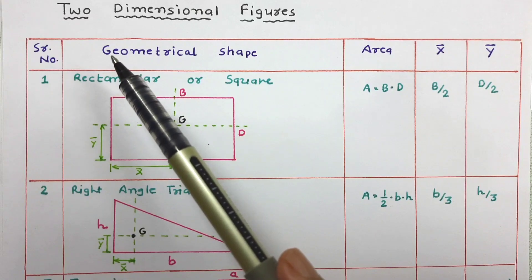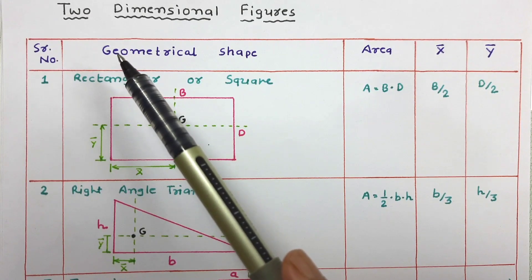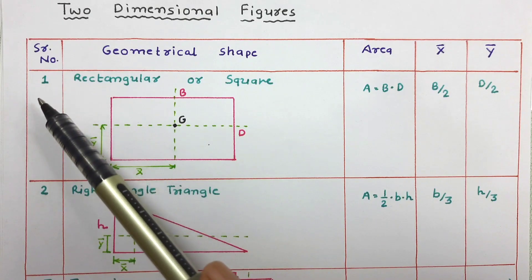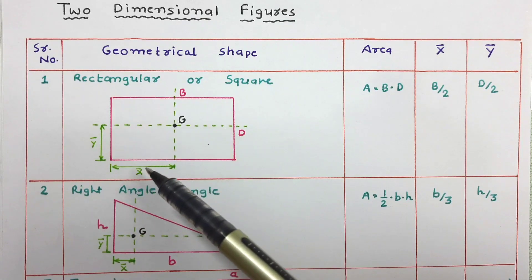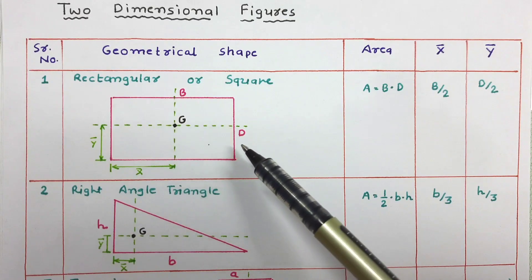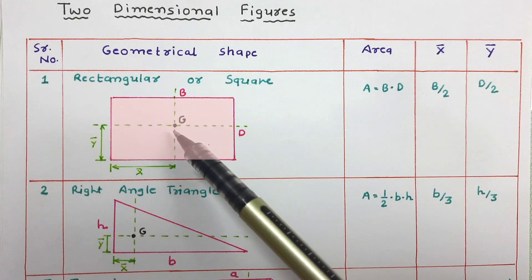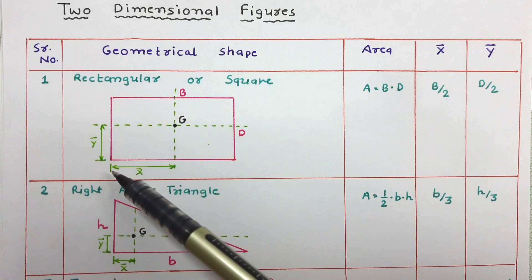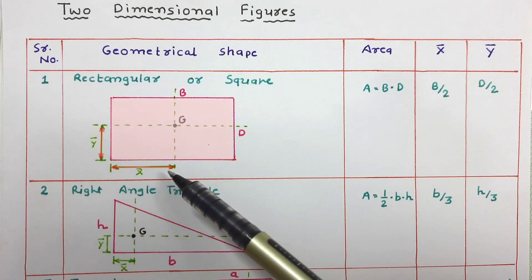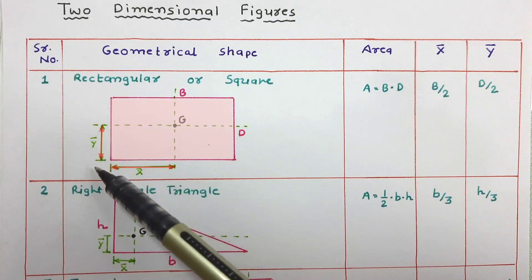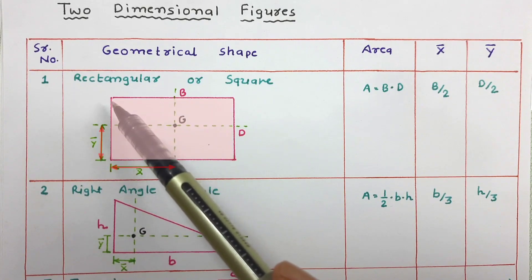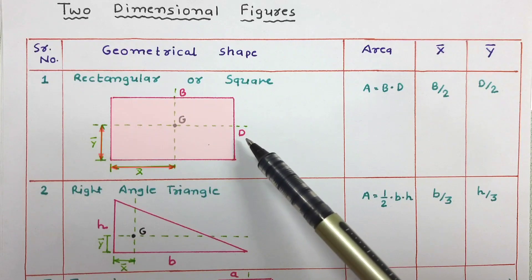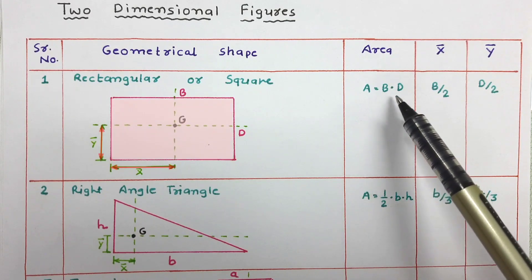Let us see the centroidal distance and area of some standard two-dimensional figures. We start with the rectangular or square shape. In this figure, we can see a rectangle having width b and depth d. The area of this rectangle will be b into d, that is breadth into depth. So area equals b into d.